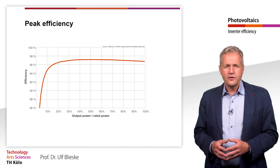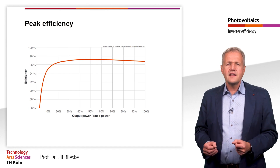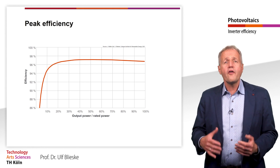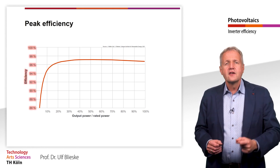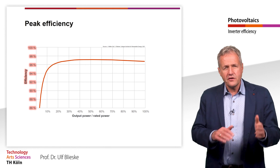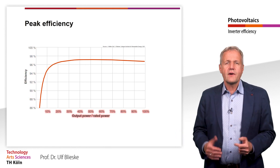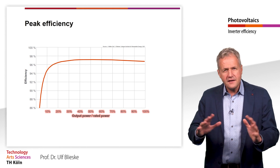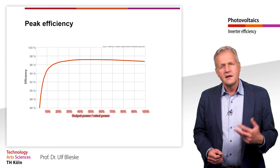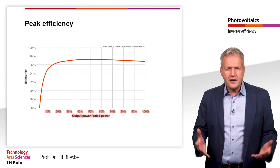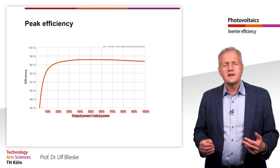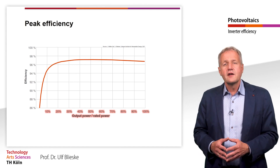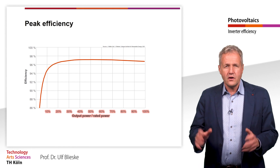Let's take a closer look. Here you can see a typical diagram showing the efficiency curve of an inverter. On the y-axis the total efficiency is plotted. On the x-axis we see the ratio between the instantaneous output power and the AC nominal power of the inverter. At a value of 100%, the inverter delivers its maximum possible power.